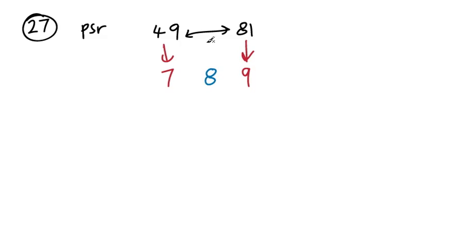So let's send this back up. And when we send it back up, we've got to do 8 squared. 8 squared is 8 times 8, which is 64. And 64 is between these two numbers. So 64.